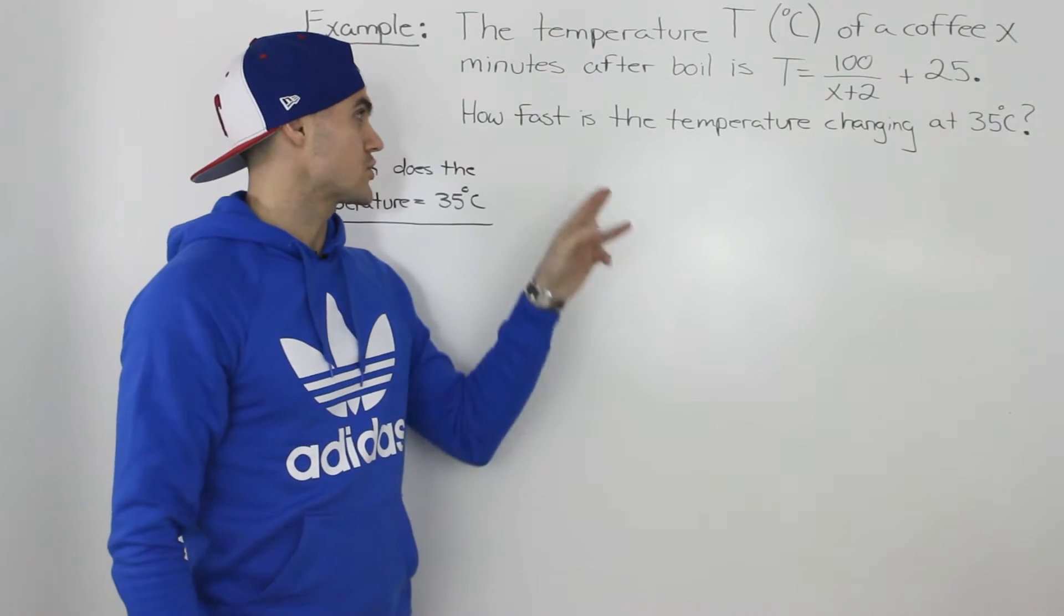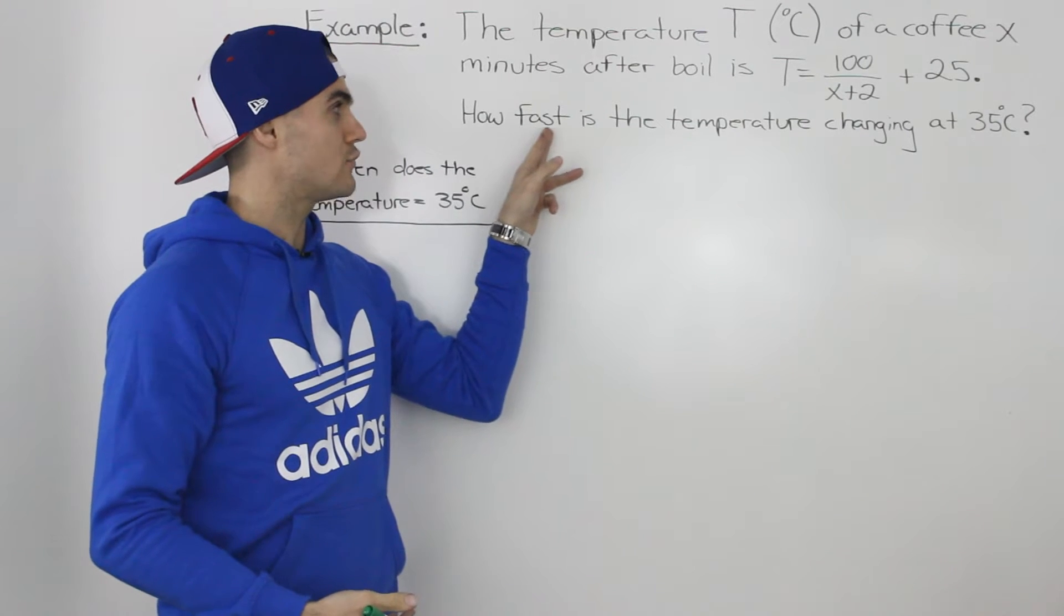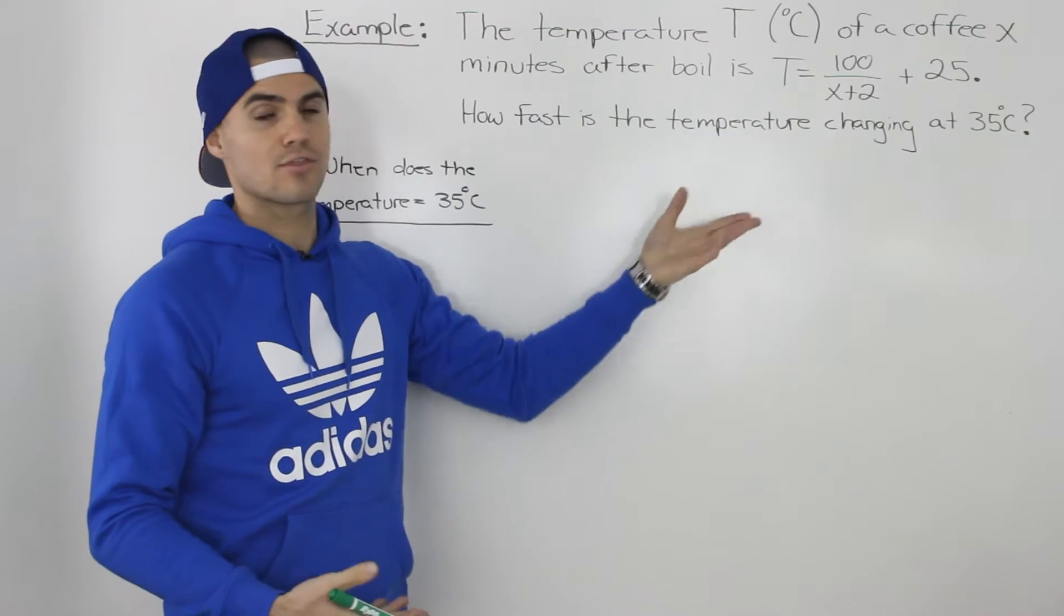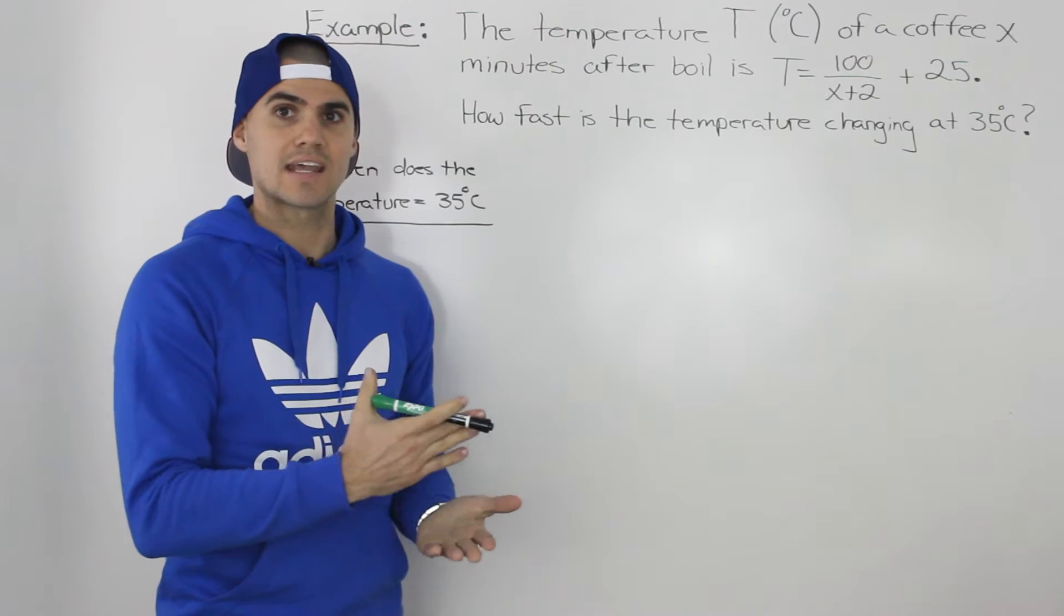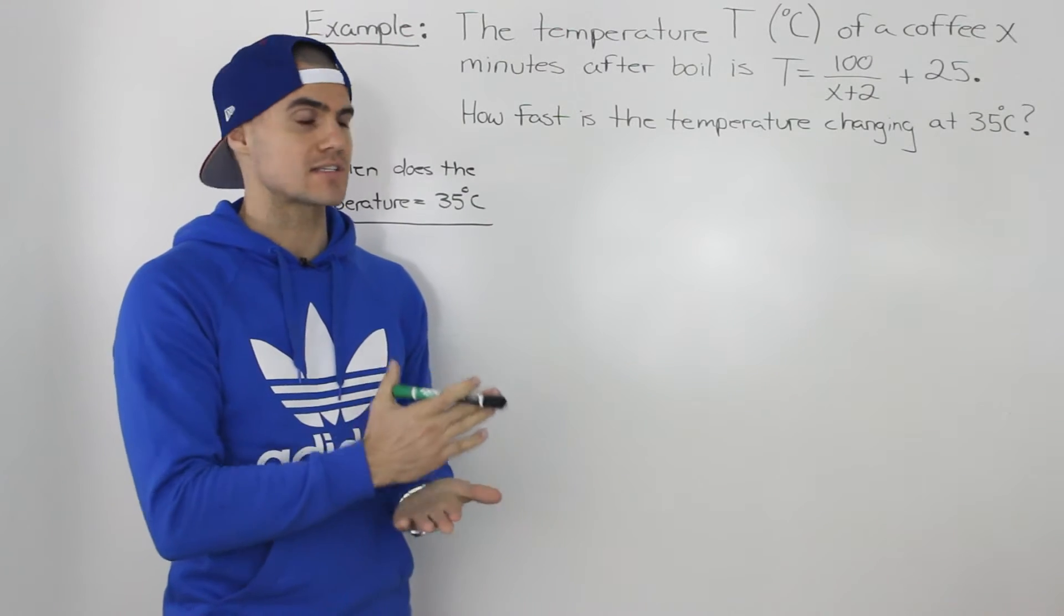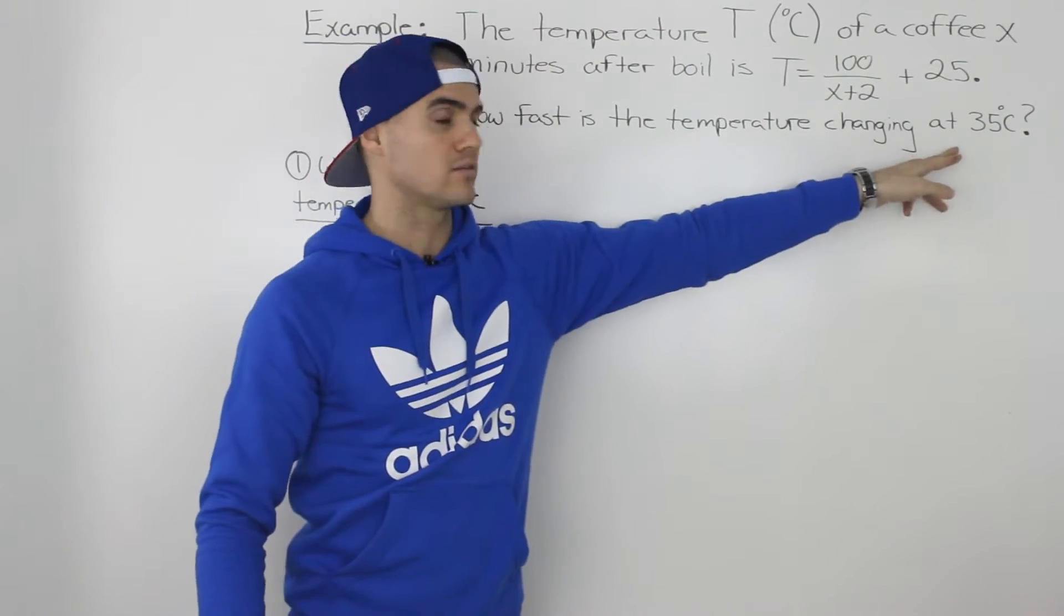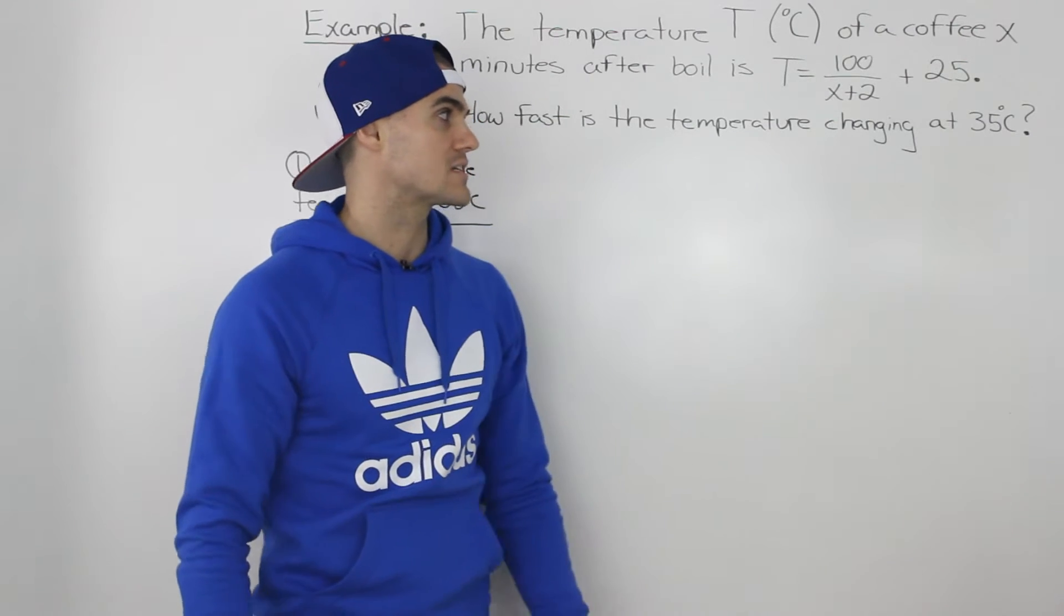Now just from looking at the question, you can tell it's a rate of change question because they're asking how fast is the temperature changing at 35 degrees Celsius, and it's instantaneous rate of change because it's at a specific point in time when the coffee reaches 35 degrees Celsius.